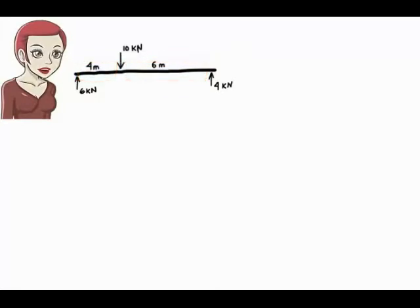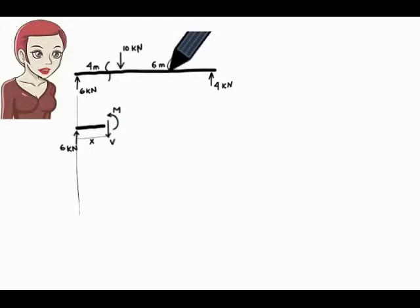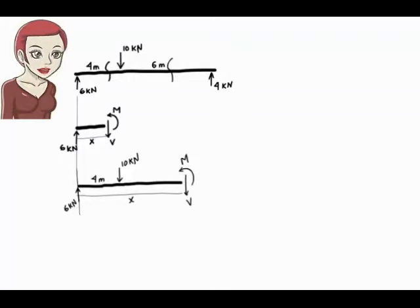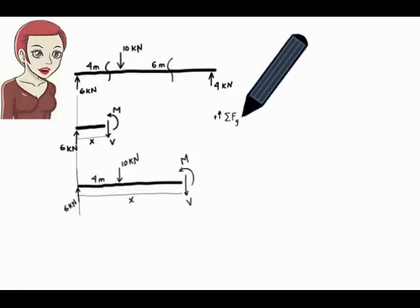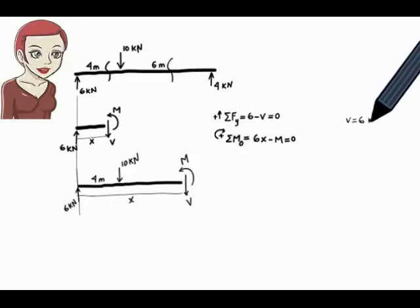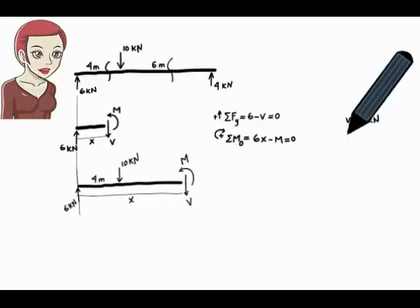Step 3: cut the beam in each segment and draw the free body diagram of the left part. Here is the free body diagram when the beam is cut in segment AB, and here is the free body diagram for segment BC. Step 4: formulate the equilibrium equations for each free body diagram and solve for the unknown shear and moment. For the first free body diagram, summing forces in the y-direction gives v = 6, and summing moments about the cut point O gives m = 6x.